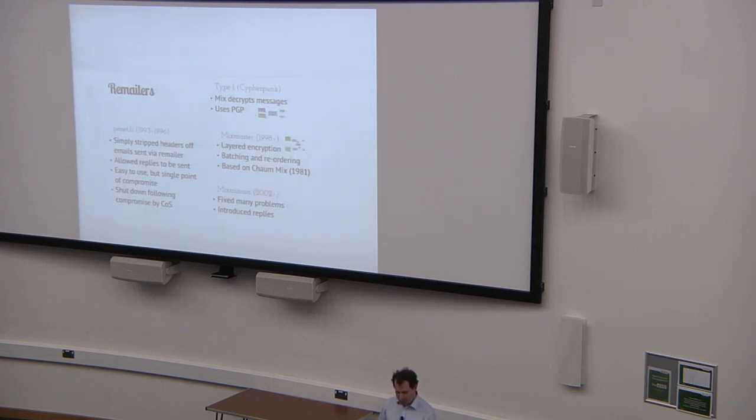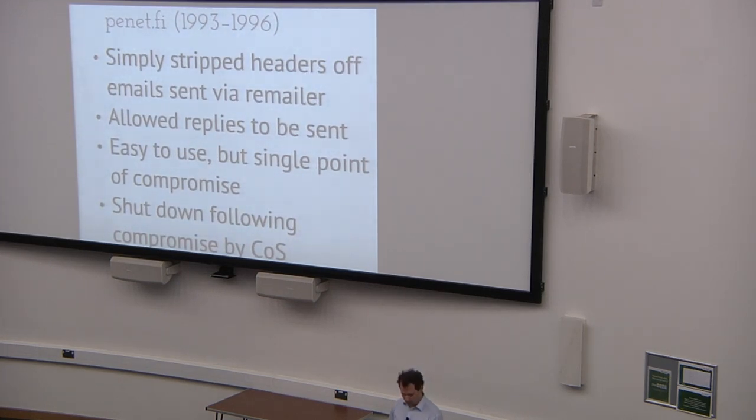The first type of anonymous communication technology was to do with email and these were collectively known as remailers. The simplest one of them was the penet.fi run out of Finland. And this was very simple. All that it did was it would take any specially formatted email in. And in that specially formatted email, you would have inside the body of the email, the address that you really want to send this email to, and then you send it to penet.fi. The headers will be stripped off this email, and then the new to address gets substituted, and then this email goes on to the final destination. The recipient of that email now sees an email coming from this remailer, but isn't able to find out the email address that it originally came from.